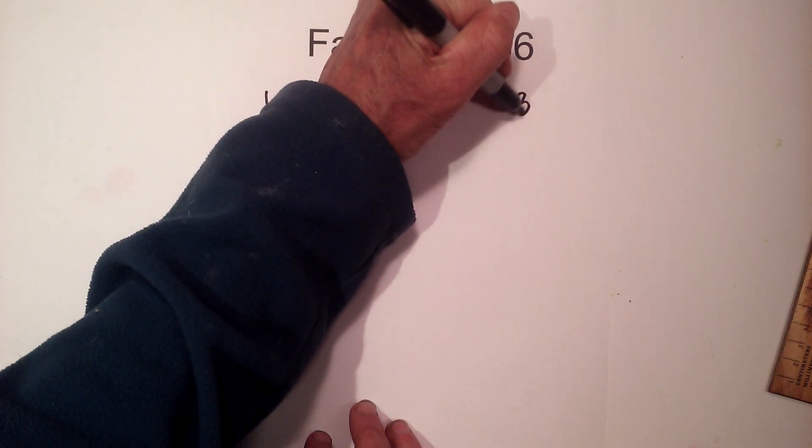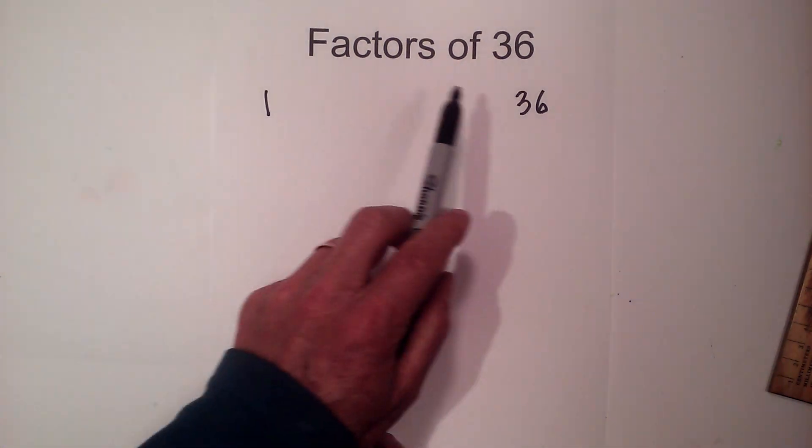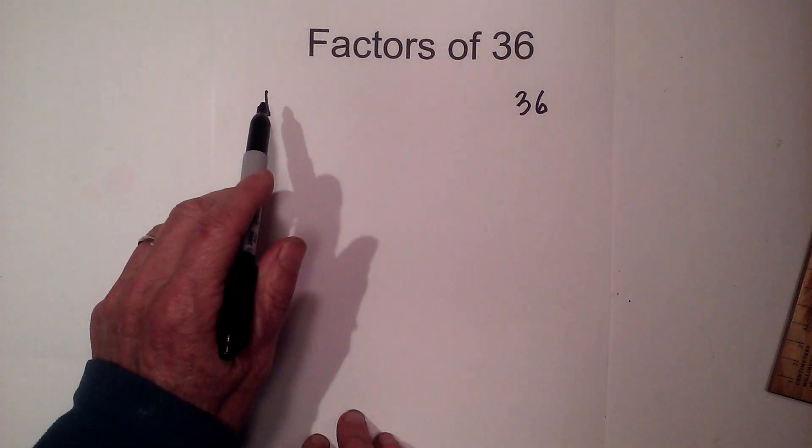I'm gonna write 1 times 36 because 1 times 36 is 36 and then find all the numbers that multiply together that fall in between 1 and 36. So let's start.